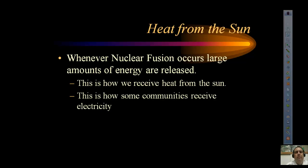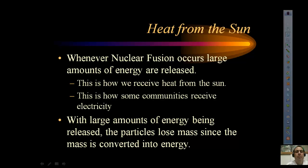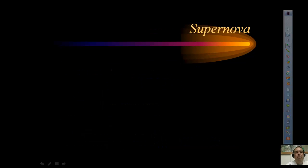Whenever nuclear fusion occurs, large amounts of energy are released. This released energy is how we receive heat from the sun to warm the Earth, and how some communities receive electricity through nuclear fusion reactors, converting nuclear energy into electricity. With large amounts of energy released, particles lose mass since mass is converted into energy — think of Einstein's equation E = mc², where mass moving fast enough creates energy.